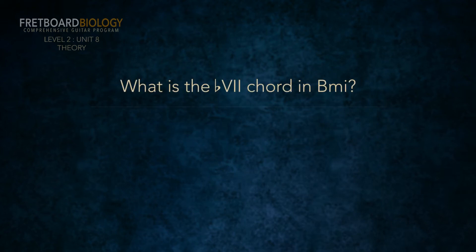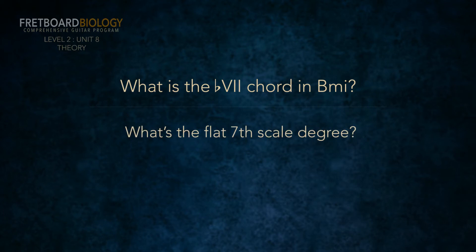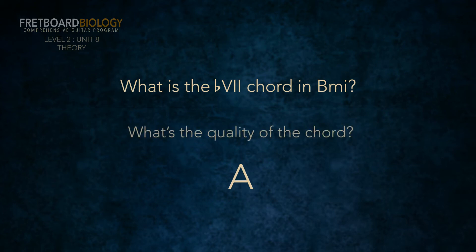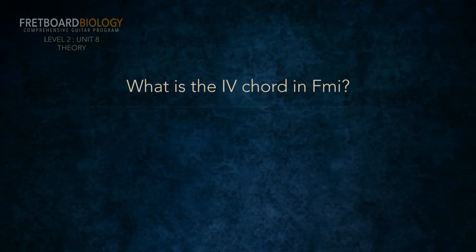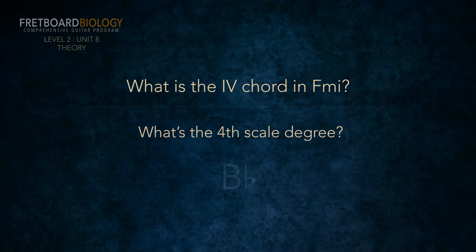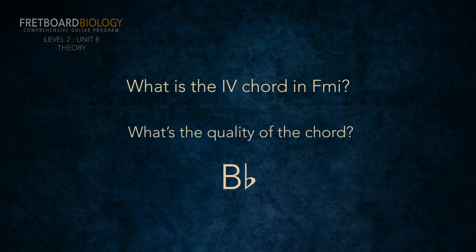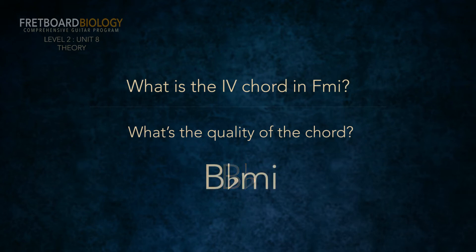What's the flat seven chord in B minor? The flat seven scale degree in B minor is A. What quality chord is built on flat seven in all natural minor scales? It's major. So the flat seven chord in B minor is A major. What's the four chord in F minor? The fourth scale degree in F minor is B flat. The quality built on four in all natural minor scales is minor. So if the fourth scale degree is B flat and the quality is minor, the four chord in F minor is B flat minor.